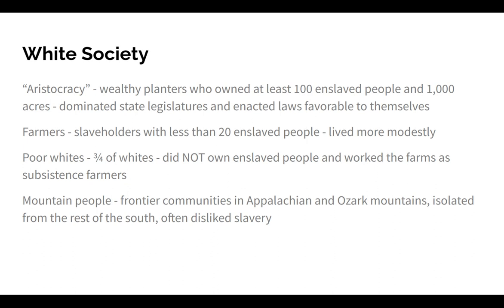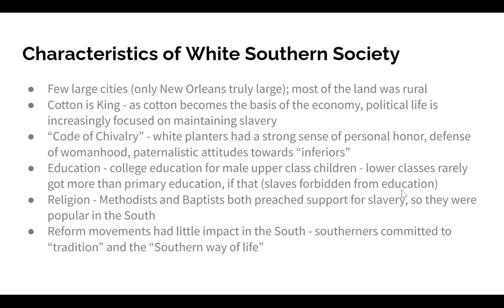White Southern society in the antebellum period was mostly rural. Only New Orleans was a truly large city; few other large cities existed, mostly on coastal areas. Cotton was absolute king — as it became the basis of the economy, thanks to Eli Whitney's cotton gin and huge demand from England and the North for textile manufacturing, political life became increasingly focused on maintaining slavery as the system of labor sustaining the wealth coming from plantation farms.